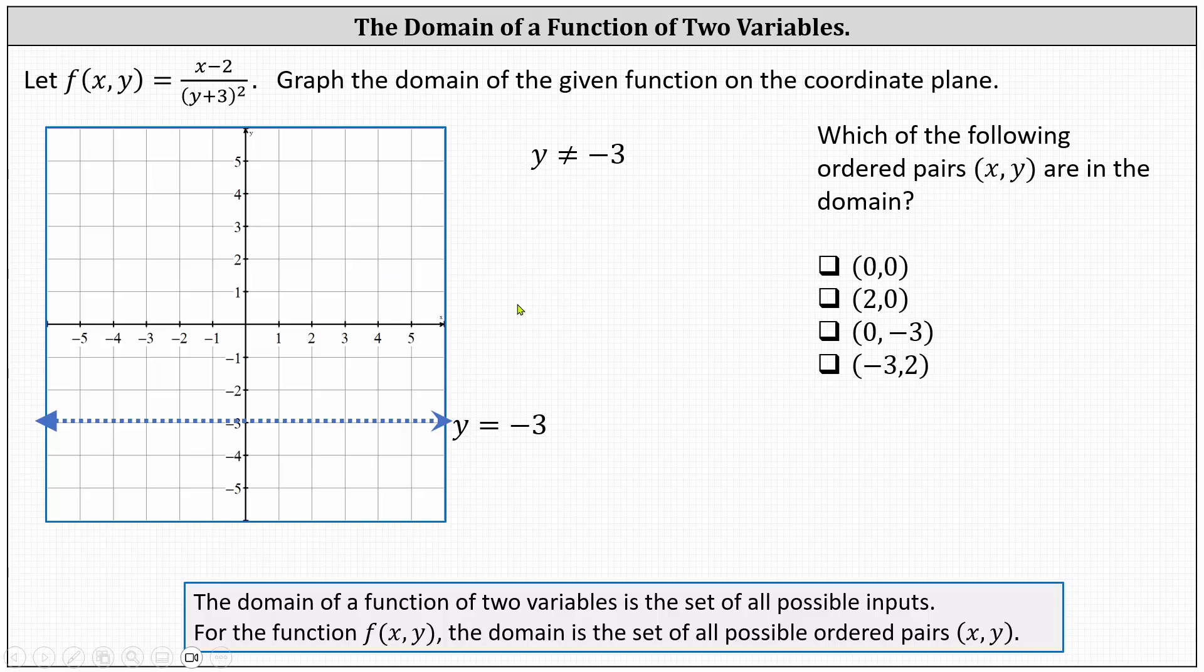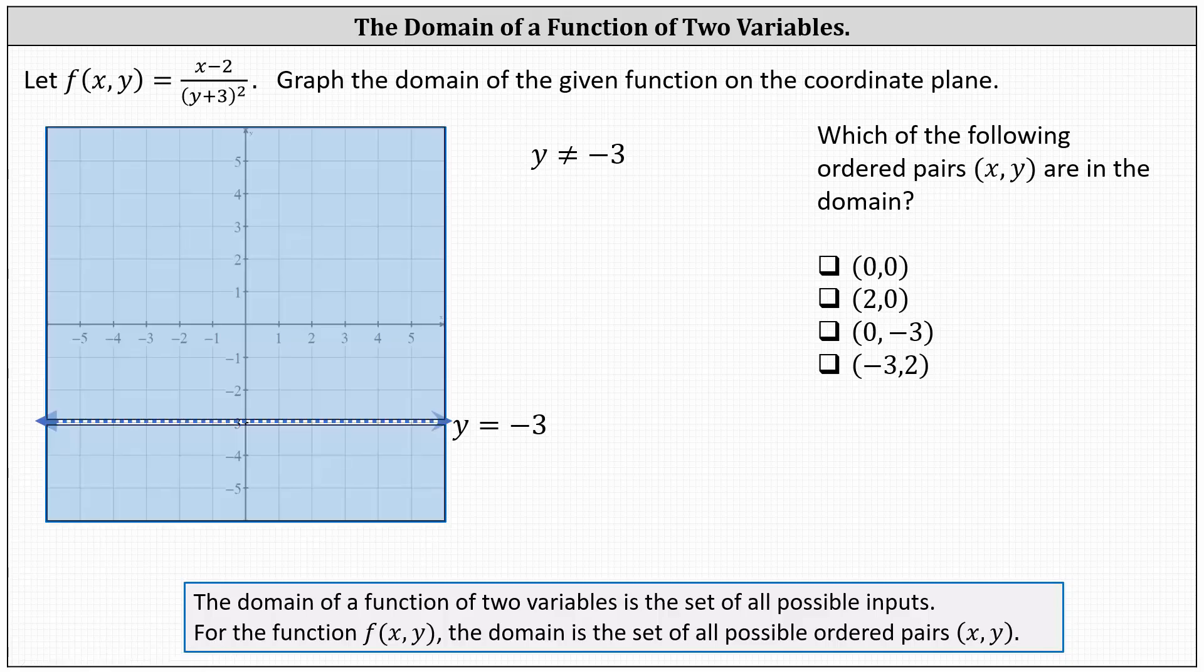And now we need to shade everything else on the coordinate plane, meaning we shade above and below the dashed line y equals negative three.